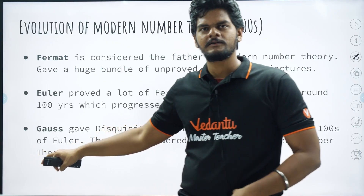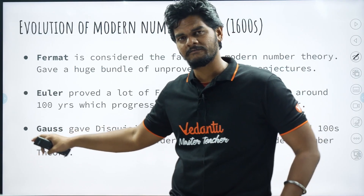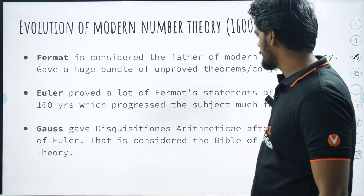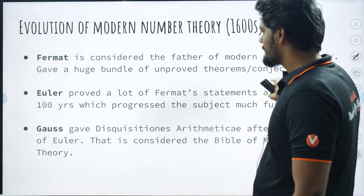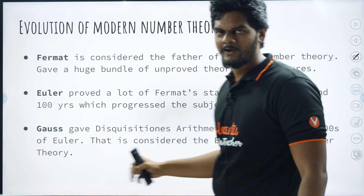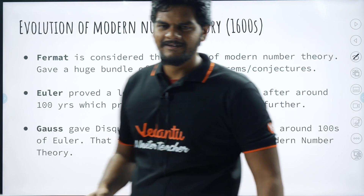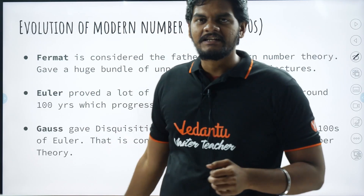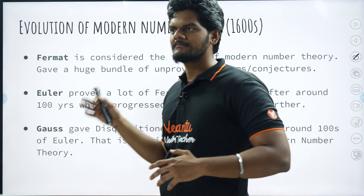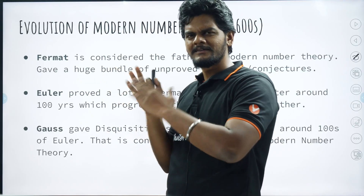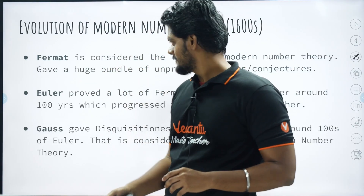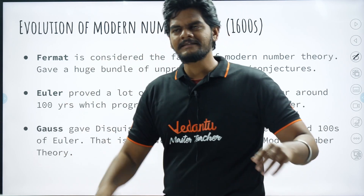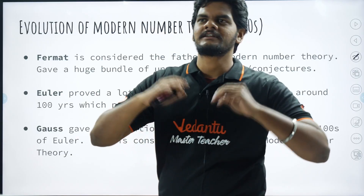Then Gauss came in. You must have heard the name of Gauss. He gave a book — I am not daring to pronounce it — but that book is considered the Bible of modern number theory. He came around 100 years after Euler. So these are like the three giants of number theory: Fermat in the 1600s, Euler in the 1700s, Gauss in the 1800s. These three people developed number theory — pretty much everything was developed and it was only extending after that.